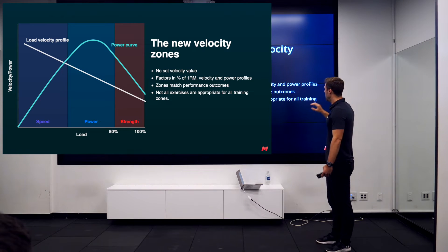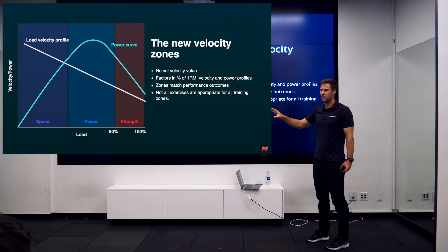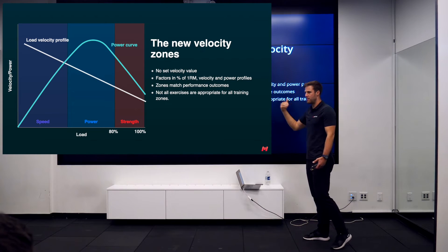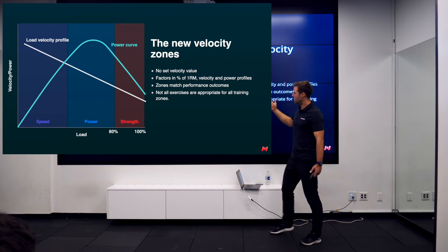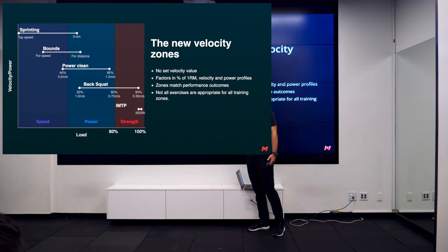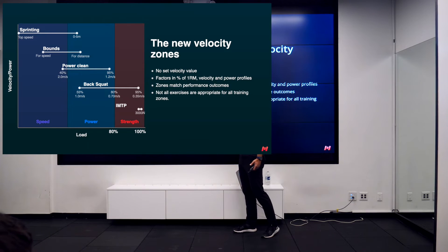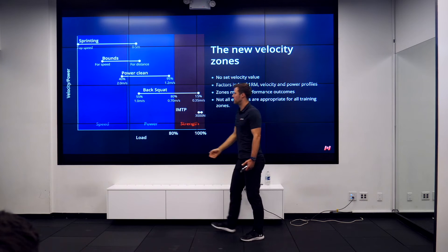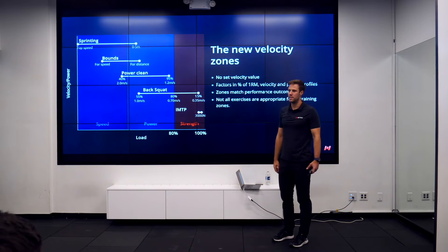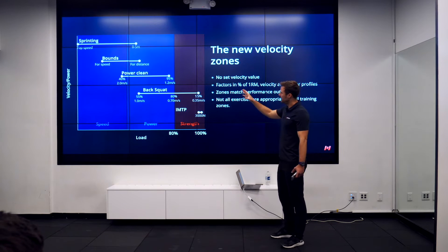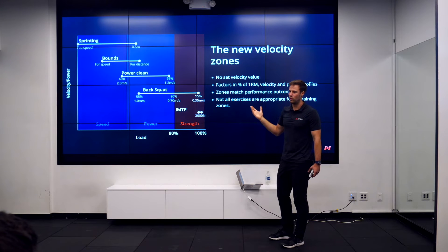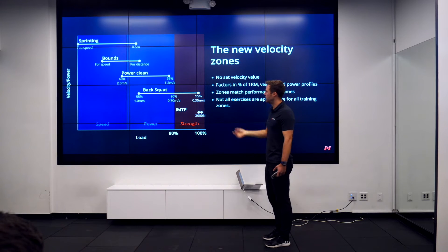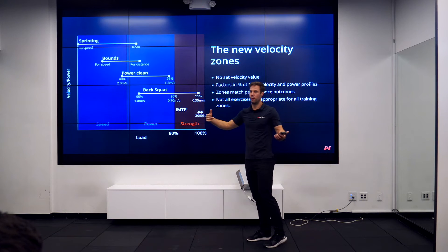What's important within this zone system is that not all exercises work in all training zones. There aren't really speed squats, and there isn't strength sprinting — they're not really things we can do. Things fit within maybe a couple of ranges but not all three. If we think about the most force you can produce on something like an IMTP — isometric mid-thigh pull — you're looking at 3,000 to 5,000 newtons. A back squat, because of the extra range of motion, won't be as force-producing as an IMTP but will be pretty high working up to a 1RM. Maybe down into the power zone with about 50% of body weight at around 1 to 1.2 meters per second — though this depends on athlete height.